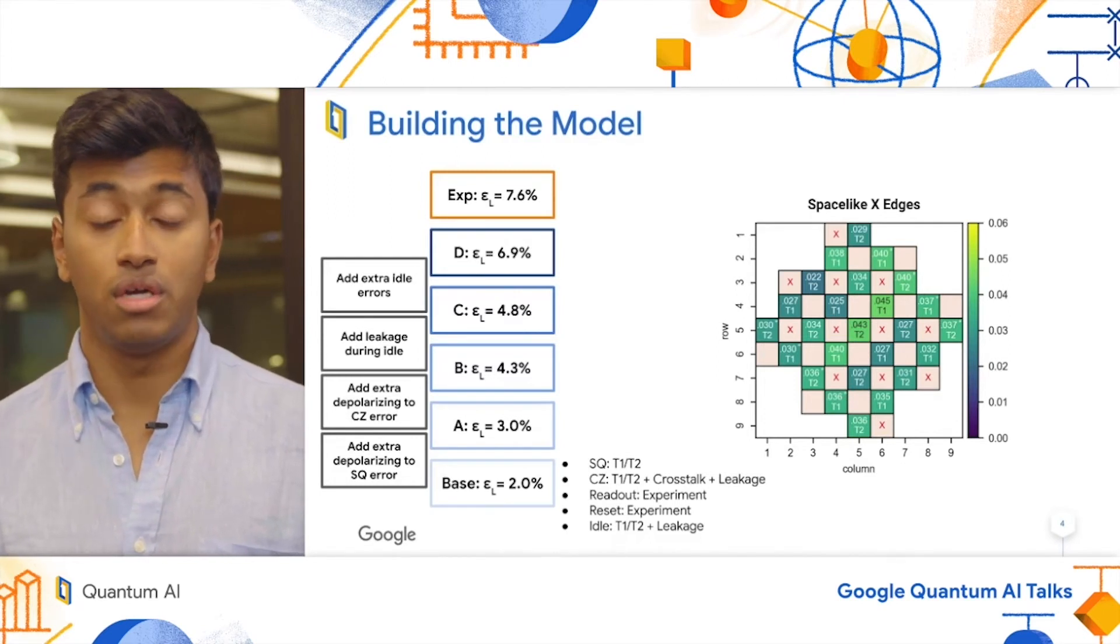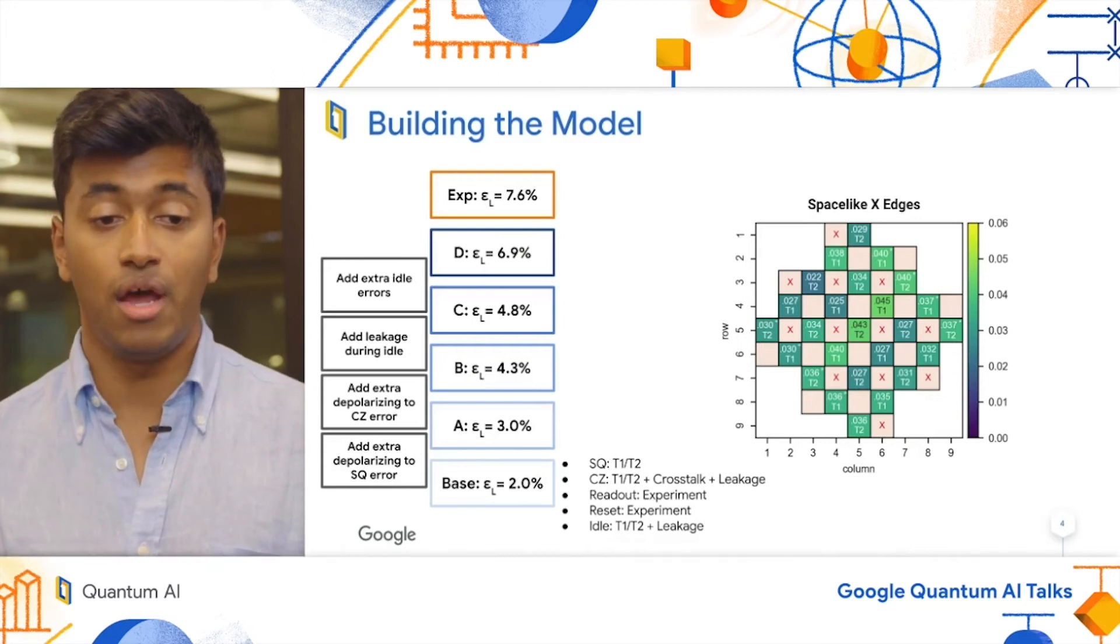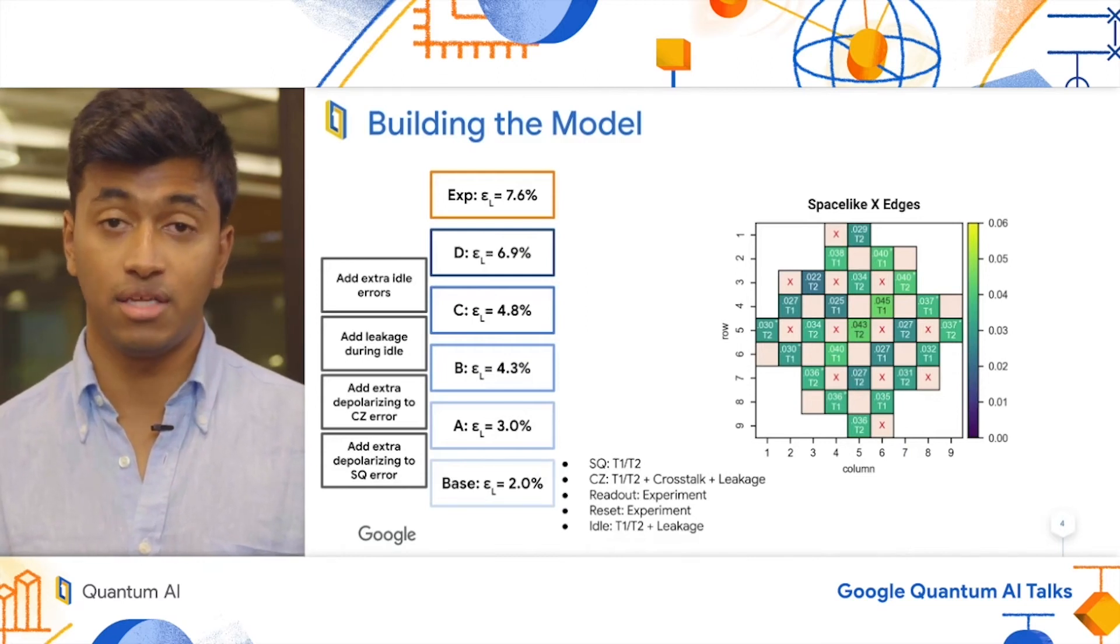Pij is essentially a correlation matrix between the different detectors in our system. And so, when two detectors fire in the same round, it indicates an error has occurred during the data qubit idle stage.